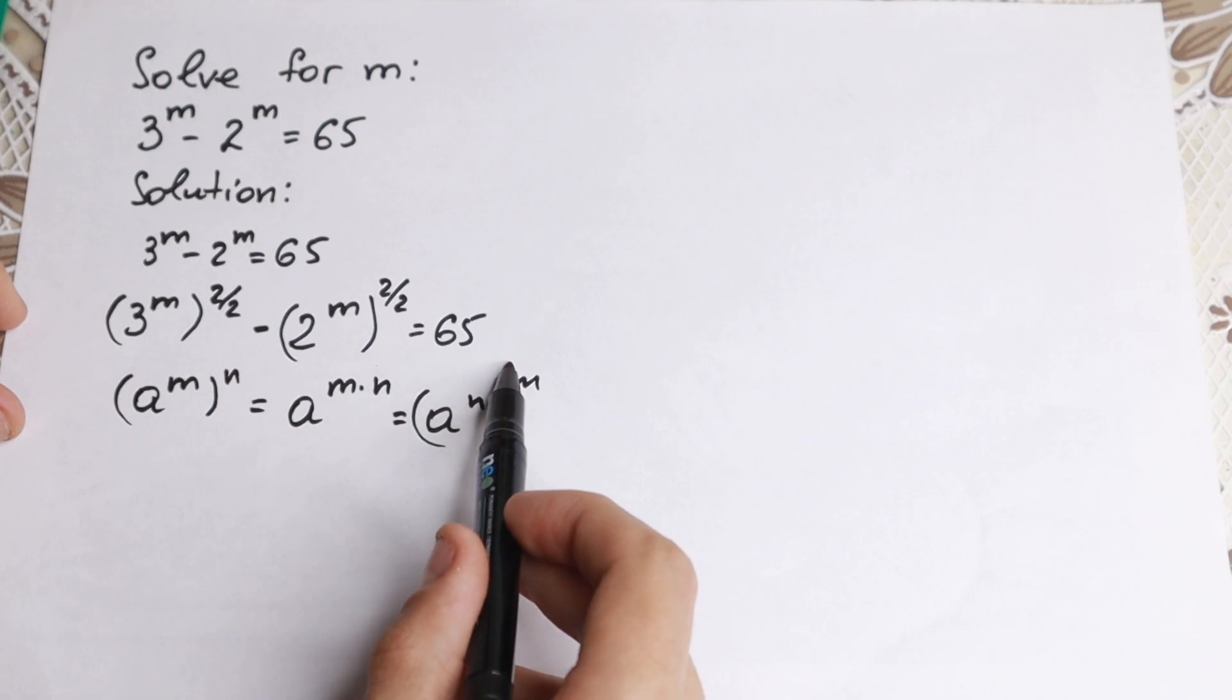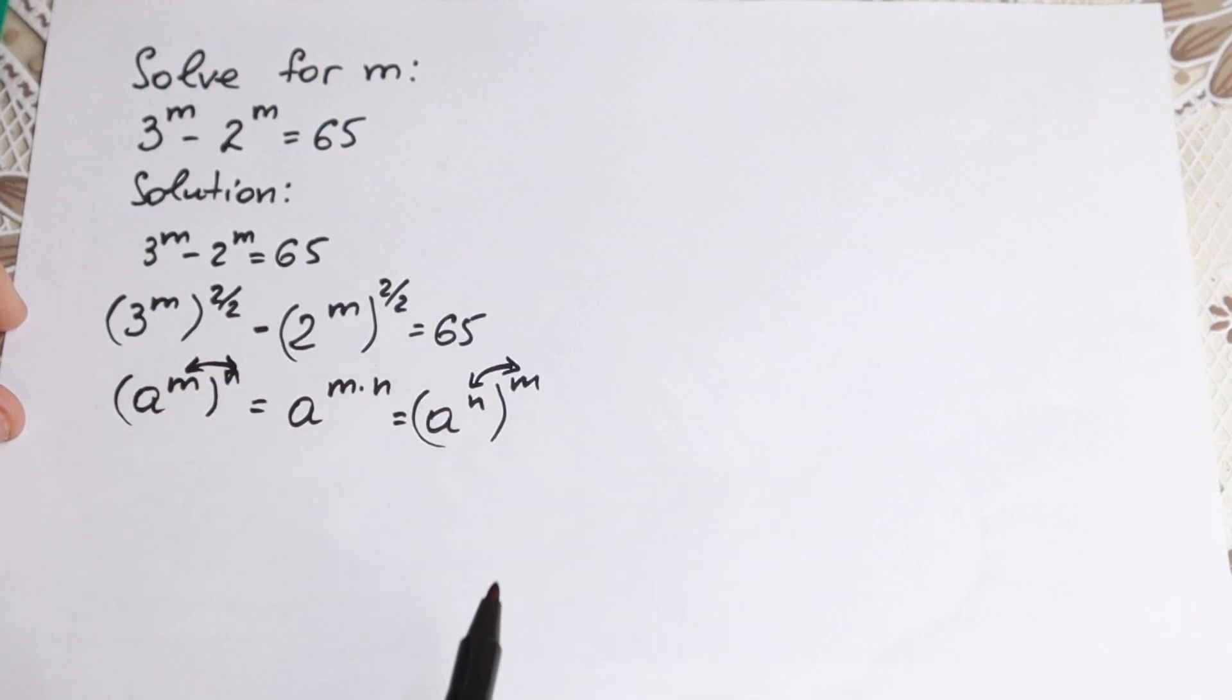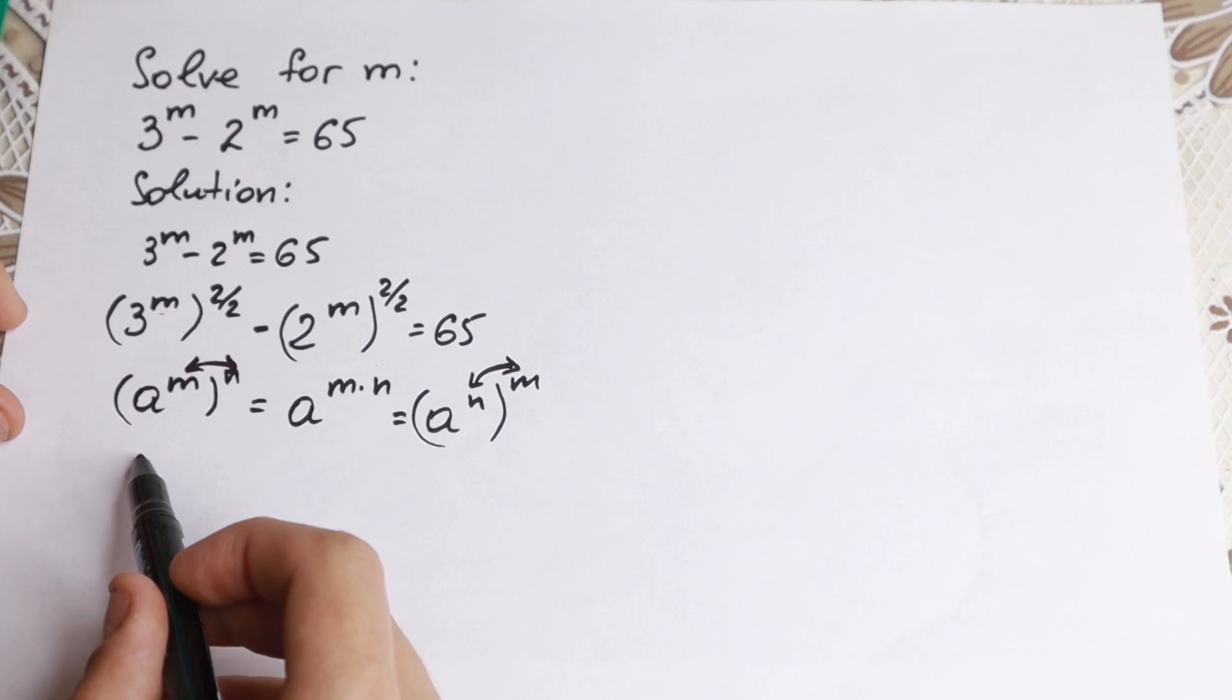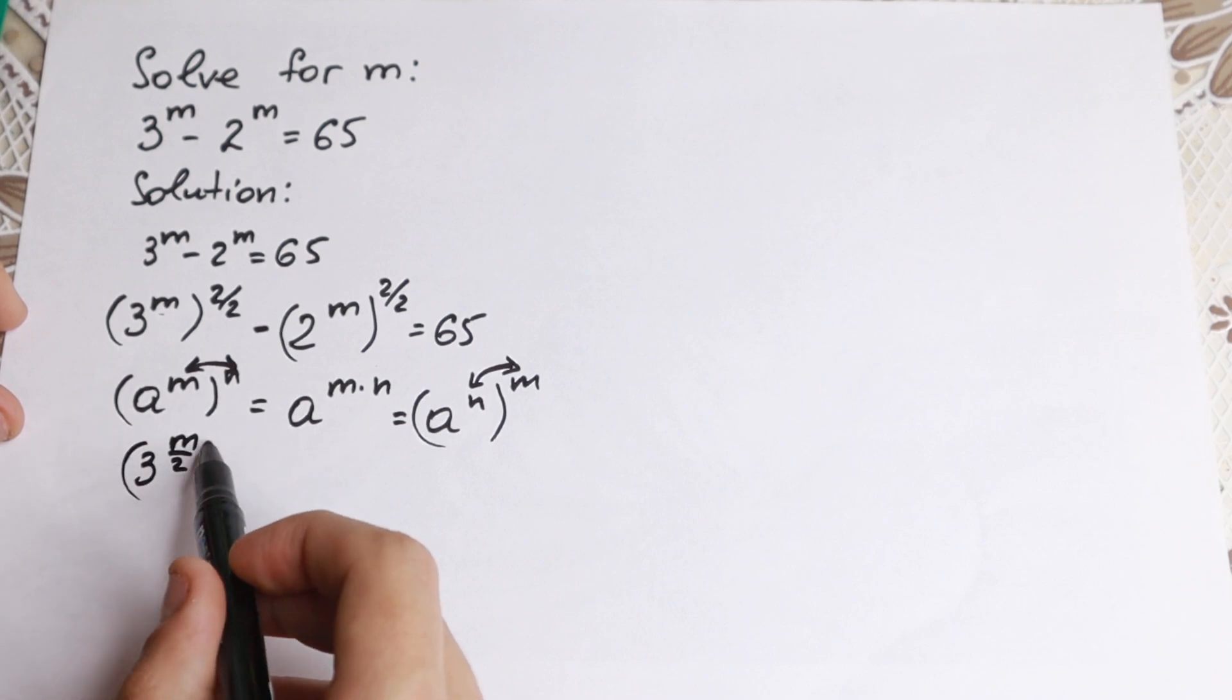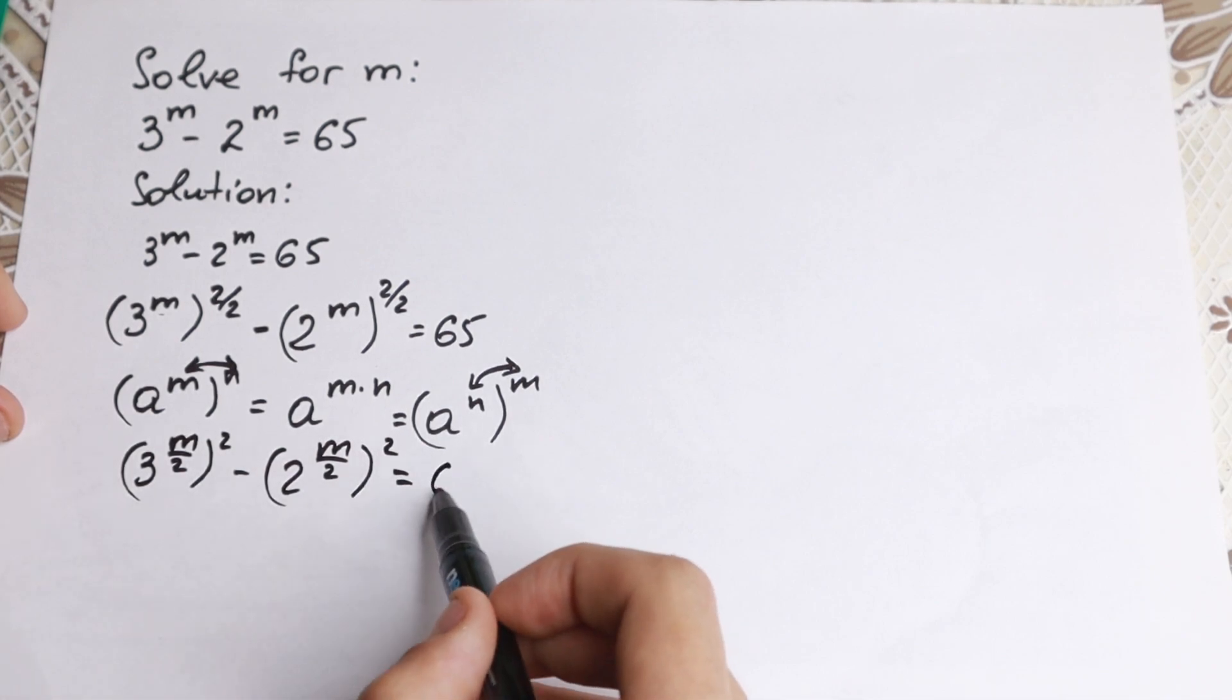So as a result, we can easily change these powers, we can easily multiply it. Right here, we can bring this 2 as a denominator of this m. So we can write it as 3 to the power m over 2 raised to the square minus 2 to the power m over 2 squared equal to 65.